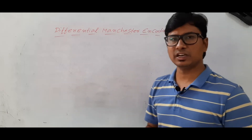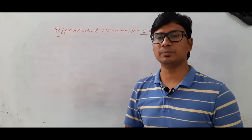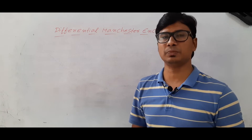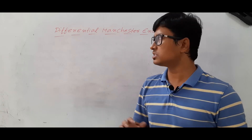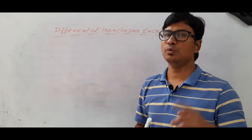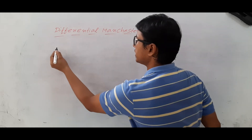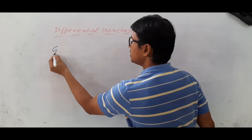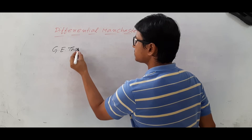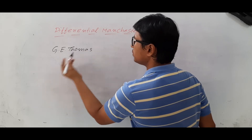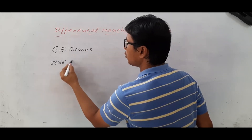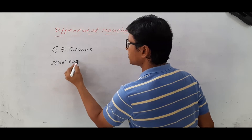In Manchester encoding, we have J.E. Thomas representation and IEEE 802.3 representation. Similarly, in differential Manchester encoding also, we have two representations. One is J.E. Thomas representation and the second one is IEEE 802.3 representation.